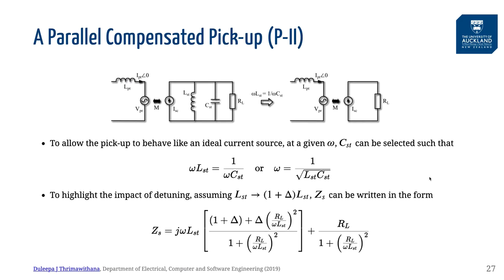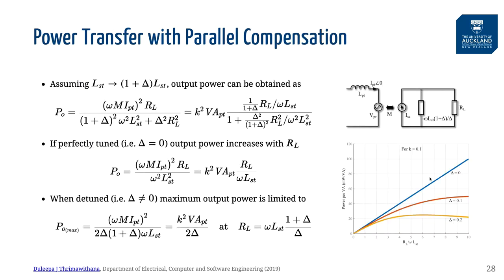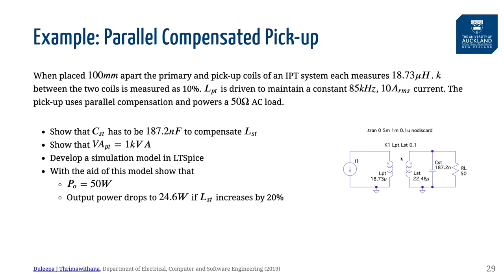When analyzing a pickup, regardless of its tuning topology, we need to account for variations in component values. For example, the self-inductance of the pickup coil can change as the displacement between the pickup and the primary coil changes. In a practical pickup, the power transfer to RL drops after a certain point depending on the variations in component values from its ideal value. In this case, we are looking at a parallel compensated pickup. Here is an example that you can work through to understand how a parallel compensated pickup behaves.